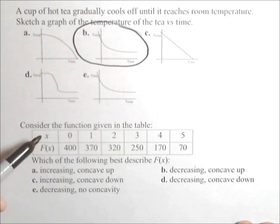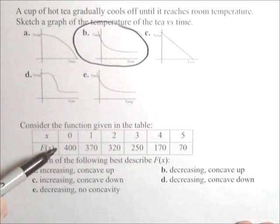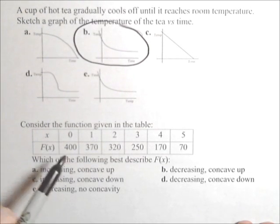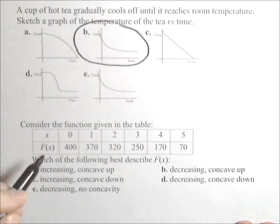The next one, consider the table, and we have to determine which best describes the data of F of X. Well first off, notice the numbers are going down as the input increases. So automatically it's decreasing.